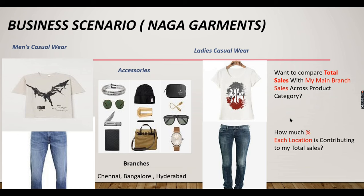The second question he wants to find is how much percentage each location is contributing to total sales. He has three branches — Chennai, Bangalore, and Hyderabad — and wants to know whether Chennai is making 40%, Bangalore 20%, and so on. Let's see how this has to be done in DAX.